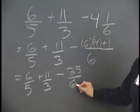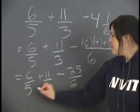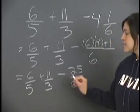So what we do here is we look for a common denominator between 5, 3, and 6, and that's 30.